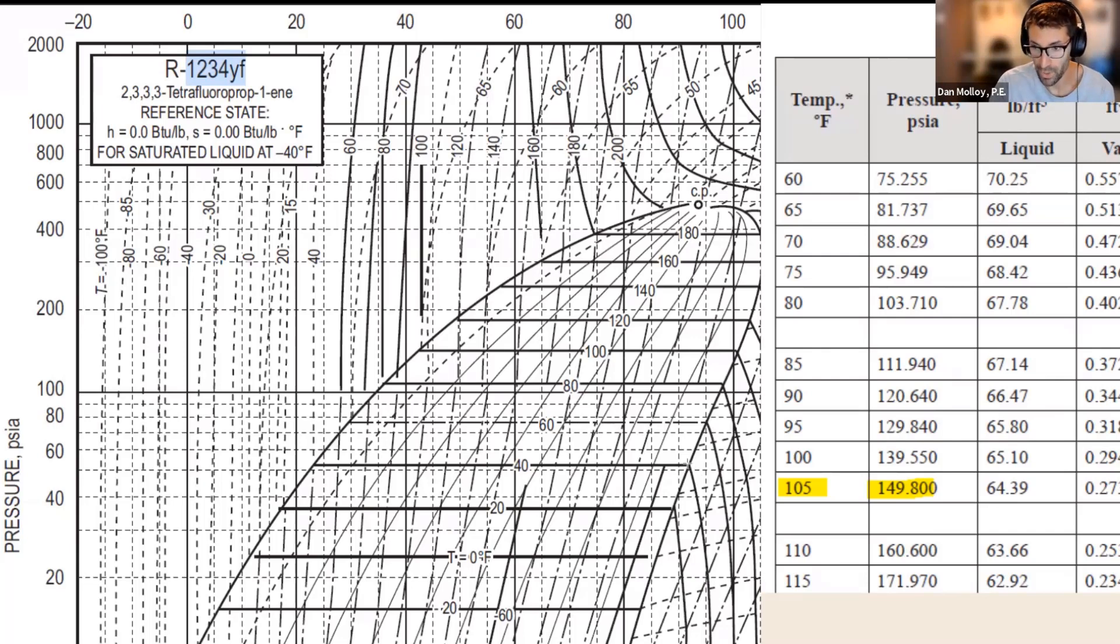It's implied that the process continues to be constant pressure, which means horizontal. So as you're horizontal through the evaporator, you're going to continue horizontally to the right.